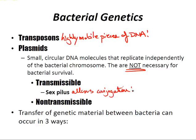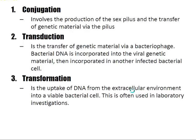Transfer of genetic material between bacteria occurs in three ways. Number one: conjugation — involves the sex pilus and transfer of genetic material through the pilus. Number two: transduction — transfer of genetic material via a bacteriophage, where bacterial DNA is incorporated into viral genetic material then into another infected bacterial cell. Number three: transformation — the uptake of DNA from extracellular environments into a viable bacterial cell, often used in laboratory investigations.